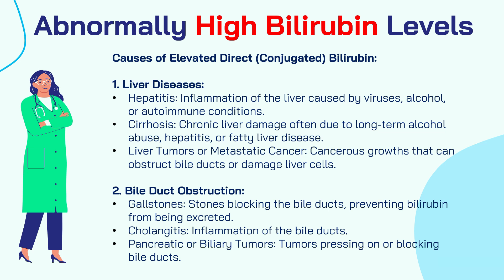The causes of elevated direct or conjugated bilirubin fall into two categories: liver diseases and bile duct obstruction diseases. Liver diseases include hepatitis (inflammation of the liver caused by viruses such as hepatitis A, B, C, D, or E), alcoholic hepatitis, or autoimmune conditions; liver cirrhosis from chronic liver damage due to long-term alcohol abuse, hepatitis, or fatty liver disease; and liver tumors or metastatic cancers where cancerous growths obstruct bile ducts or damage liver cells.